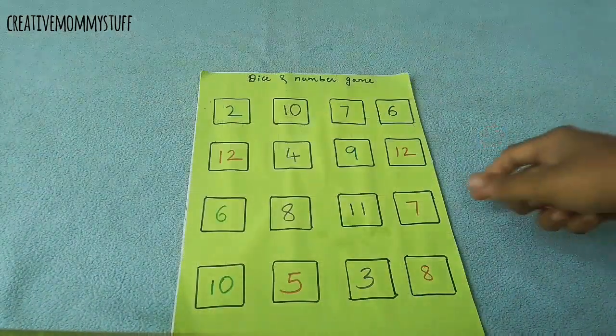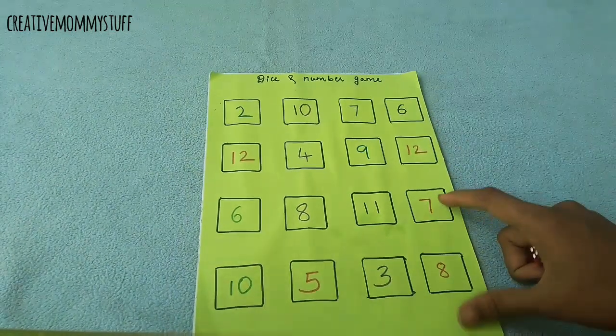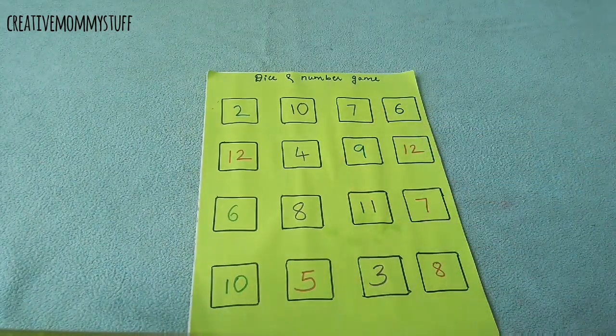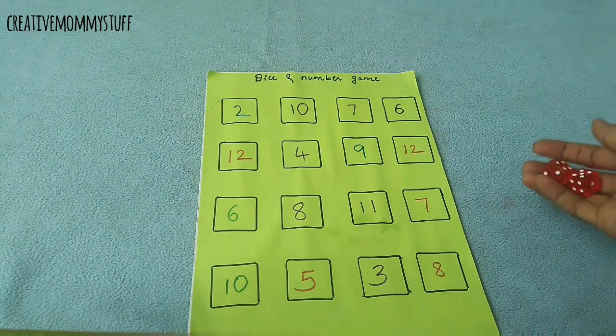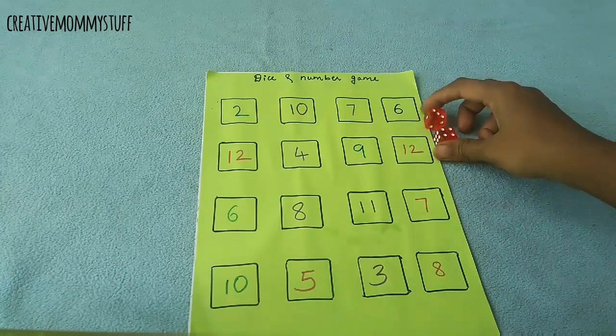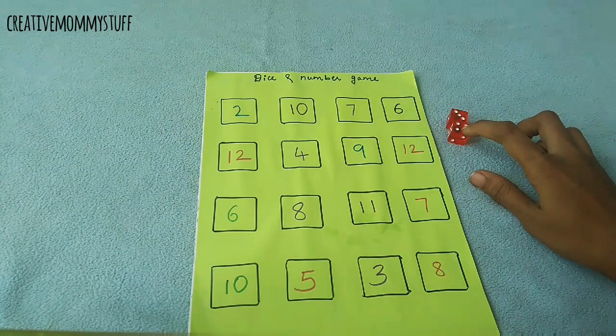For the next activity, here in a worksheet I have written different numbers on this square. So I will be using two dice here, rolling two dice, and then adding up the numbers. So three plus four will be seven.